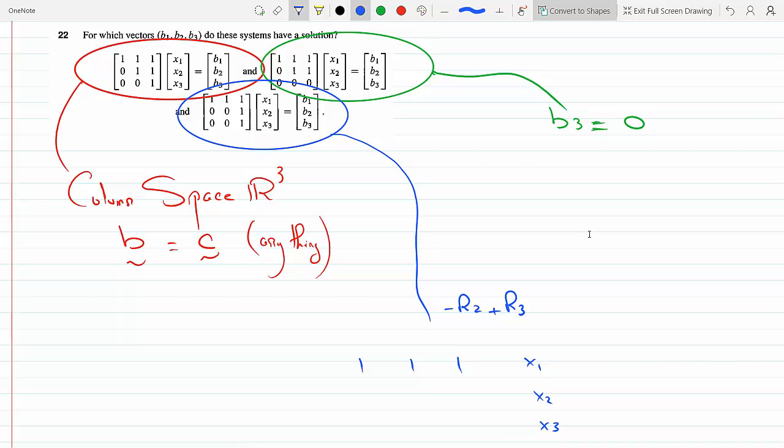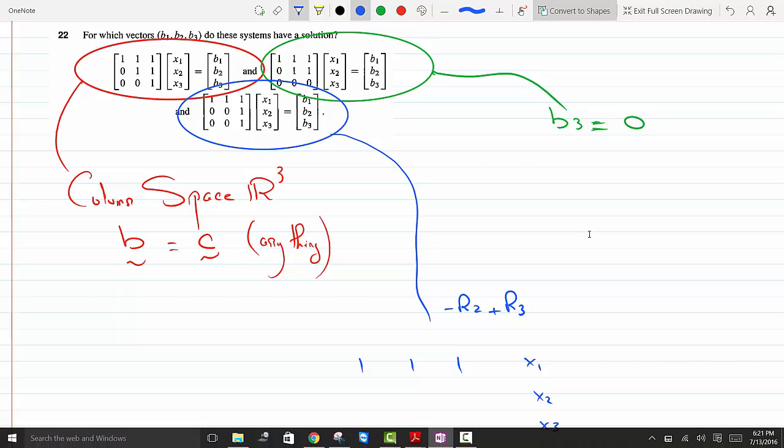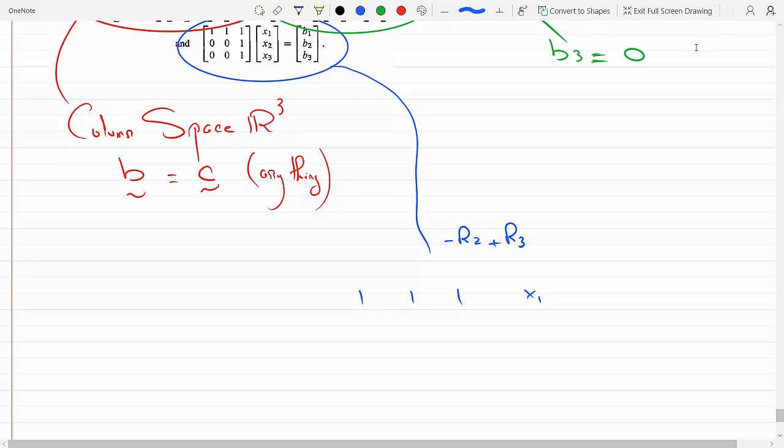Then [0, 0, 1] for x2, and here we have b1.